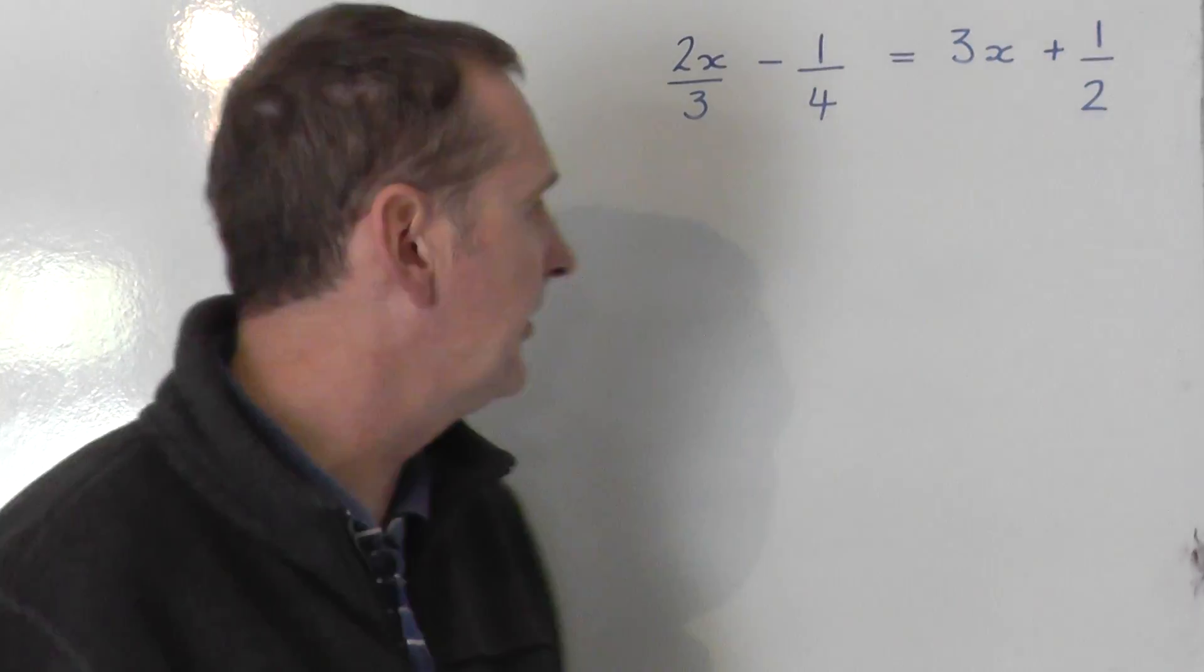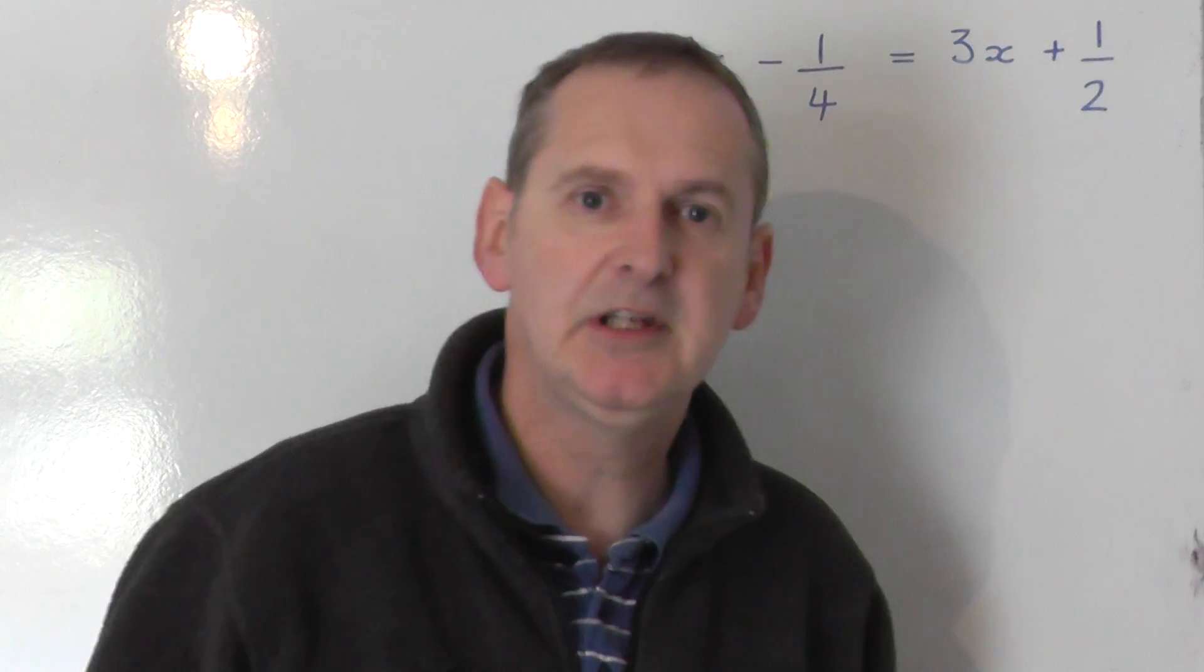OK, let's solve the equation 2x over 3, take away a quarter, equals 3x plus a half.